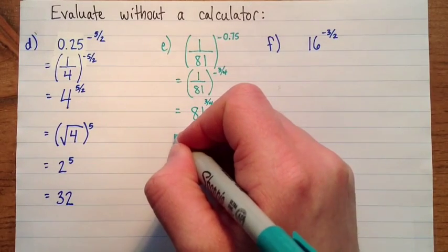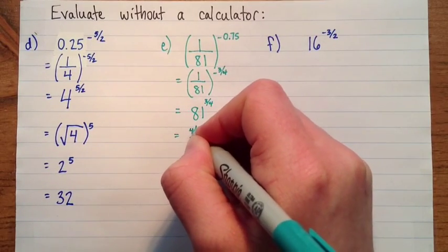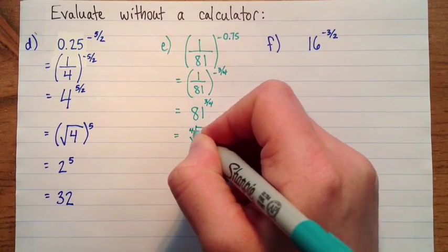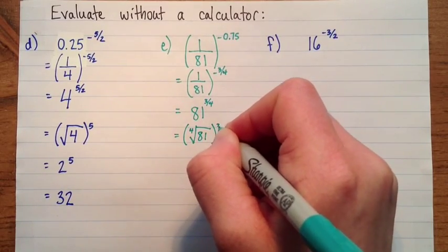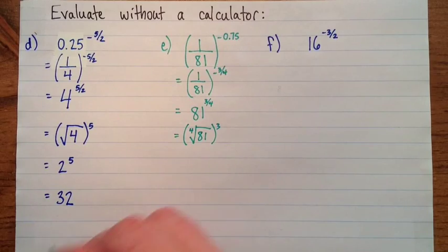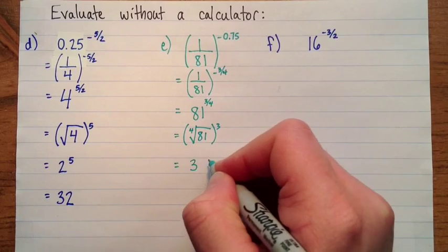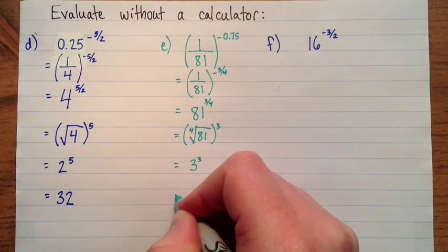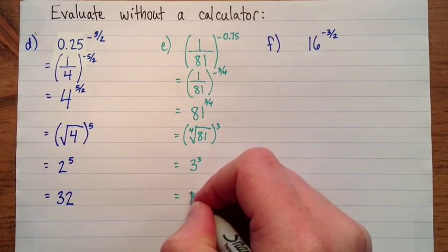And if I write this as a radical, I'll have the fourth root of eighty-one cubed. The fourth root of eighty-one is three, because three times nine, and three times three is nine, times three is twenty-seven, times three is eighty-one. So we have three cubed, and that's twenty-seven.